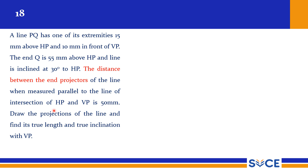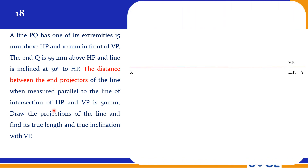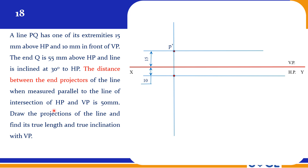With this data, we need to find the projections of the line and the true inclination with VP — that is, we need to find the true length and φ. This is the XY reference line. One extremity is 15 mm above HP and the other is 10 mm in front of VP, so we have P' and the corresponding top view projection P. The other extremity Q' is at 55 mm above HP.